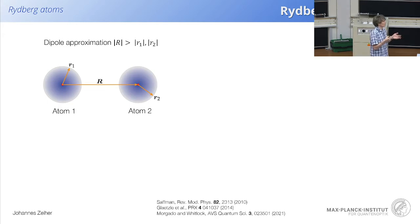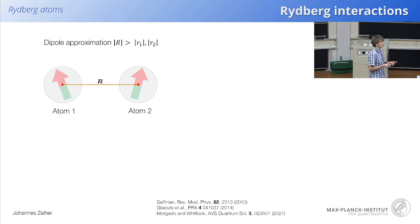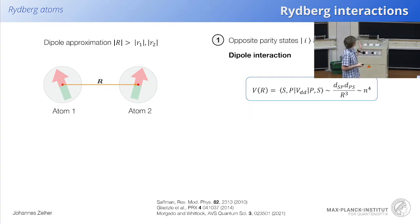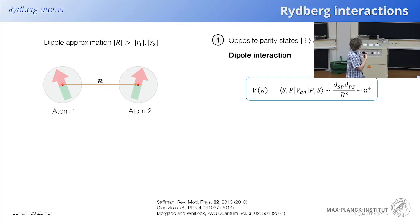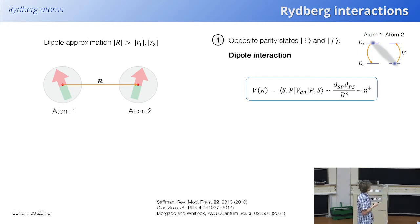We do a multipole expansion of the two interacting charge distributions. Since atoms are neutral, the charge terms vanish, and the first non-trivial order is the dipole approximation — two interacting dipoles. For the dipole-dipole interaction: if both atoms are in the same atomic state, they won't interact because the dipole operator only couples opposite parity states. But if one atom is in 50p and the other in 50s, they can couple and you get a dipole-dipole interaction.